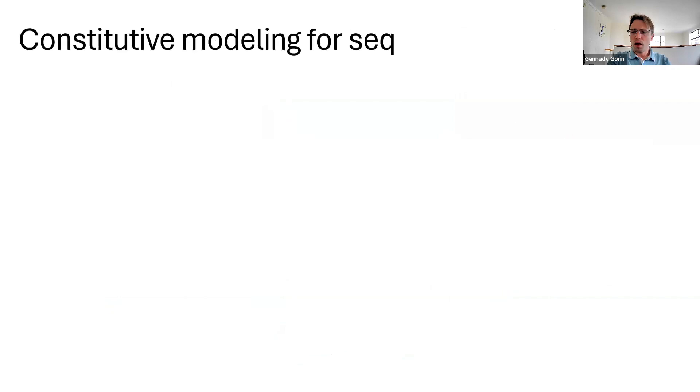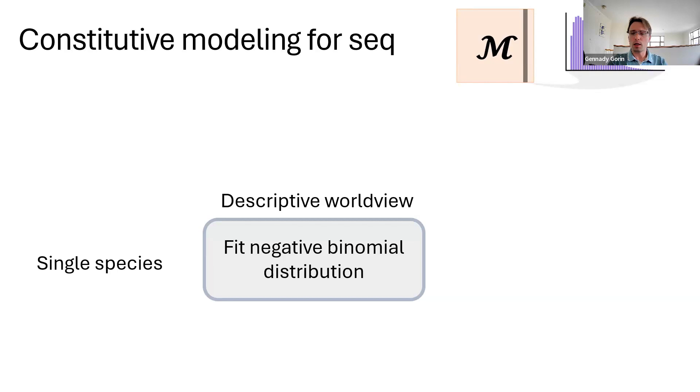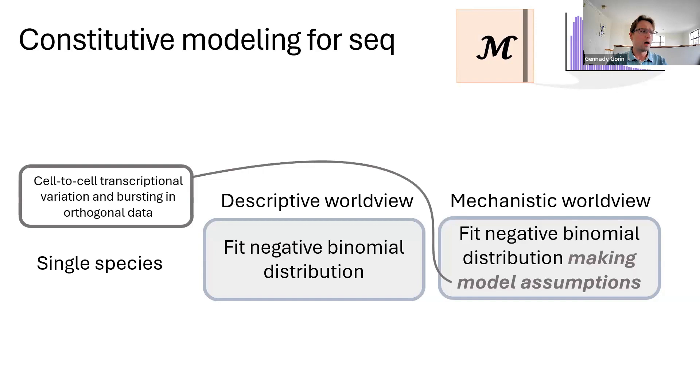And surprisingly, something very similar can happen in sequencing. We do an experiment. We get a cell-by-gene matrix of mature or spliced counts. The gene distributions look negative binomial or negative binomial. To interpret the data in a typical descriptive worldview, we fit a negative binomial distribution. Now, in the mechanistic worldview I'm advocating for, we do the exact same thing. But we motivate this distribution by a particular set of testable assumptions and by a particular model, like there's some kind of bursty transcription. There's transcriptional variation. And then RNA gets degraded, and this gives us a negative binomial. Sure, so far we've done the exact same thing in both cases.